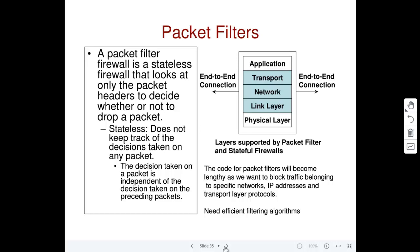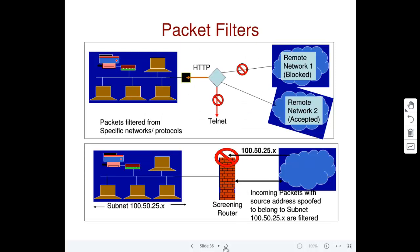One benefit of the packet filter firewall is that it's very fast in handling packets — it goes strictly by rules, and machine learning, neural network, and AI techniques can be incorporated to speed up processing. Since it doesn't maintain state information, there's very low overhead. The drawback is it will end up allowing attack packets like SYN flood packets and session hijacking packets. You can configure it to block specific networks or port numbers — for example, blocking all packets with Telnet's port number.